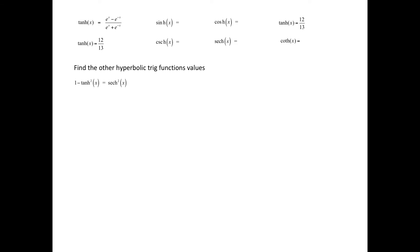We can begin by using a hyperbolic trig identity: 1 minus the square of the hyperbolic tangent of x is equal to the square of the hyperbolic secant of x. We are told that the hyperbolic tangent of x is 12 thirteenths, so substituting, we have 1 minus the square of 12 thirteenths equals the square of the hyperbolic secant of x. Squaring, 1 minus 144 over 169 equals the square of the hyperbolic secant of x, and combining with a common denominator, we get 25 over 169.